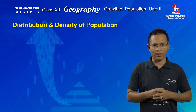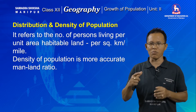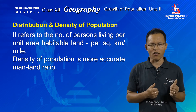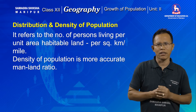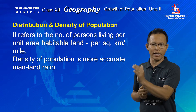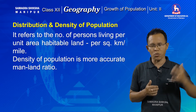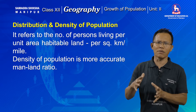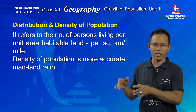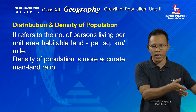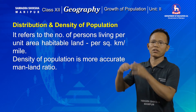Now let's come to the concept of population density. The term density refers to the number of people living per unit area of habitable land. Therefore population density represents a more accurate form of the man-land ratio. In the case of population density, the exact number of people living per unit area of habitable land is calculated. Like population distribution, population density is also highly variable all over the world — some regions have higher population density than other parts of the world.